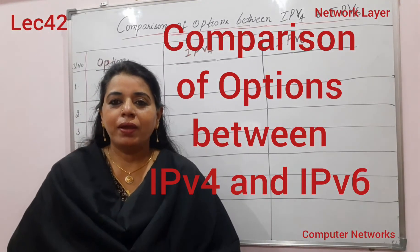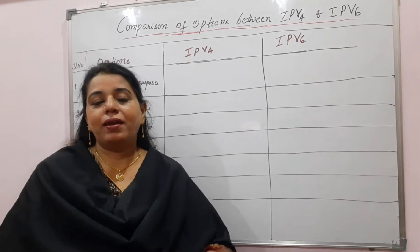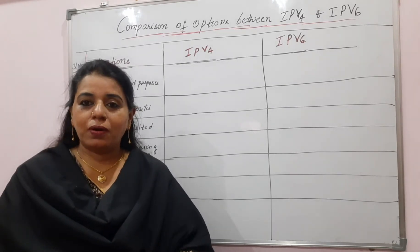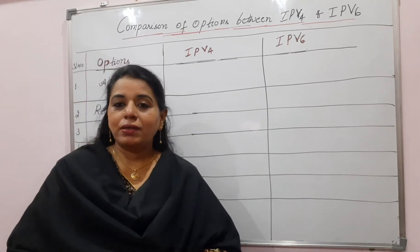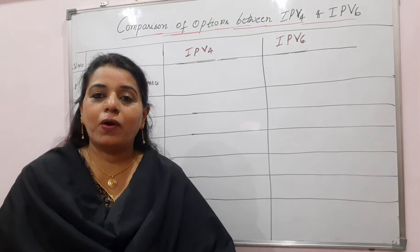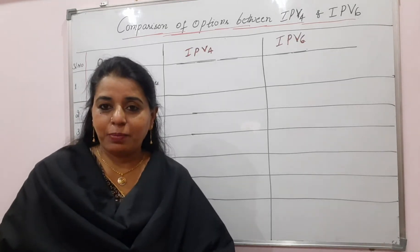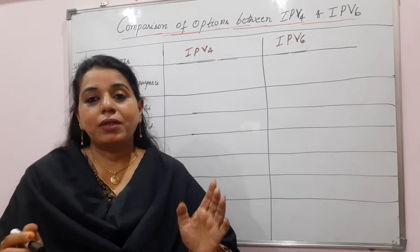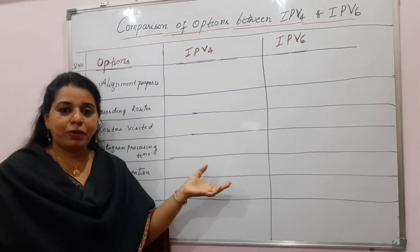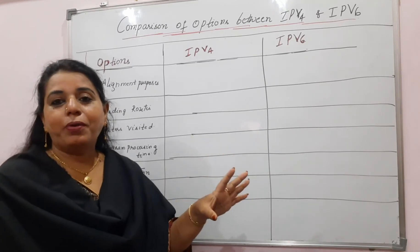Hello viewers, welcome back to my channel. Today's topic of discussion is a comparison of options between IPv4 and IPv6. When you studied IPv4, there was a separate topic called options, and I have a video lecture on options of IPv4. When you studied IPv6, there was a field in the header called the next header, which refers to different extension headers — we call those extension headers as options in IPv6. If any question is asked on comparison between options, you can write this table so all points of the comparison get covered.